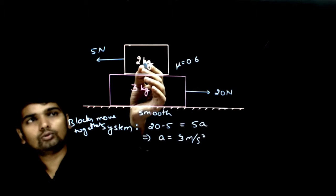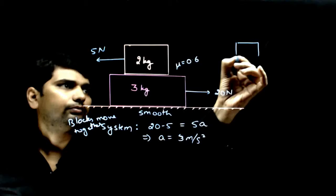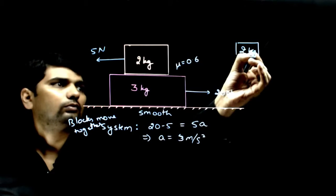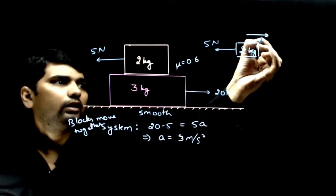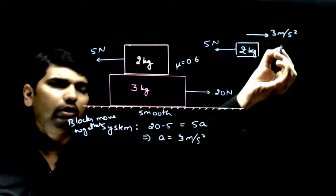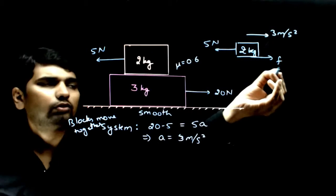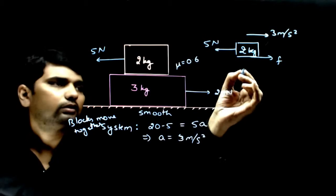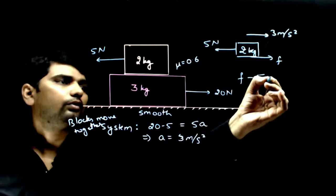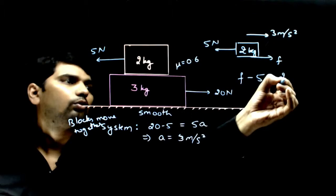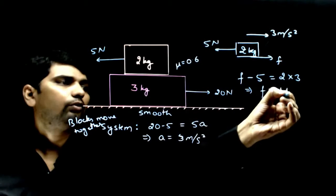In this case, if I consider the 2 kg block, the acceleration is 3 meters per second squared. That means friction force equals 2 times 3. We can find the value by writing the equation: friction minus 5 equals 2 times 3, which implies friction equals 11 Newton.